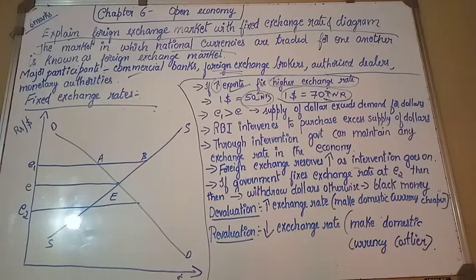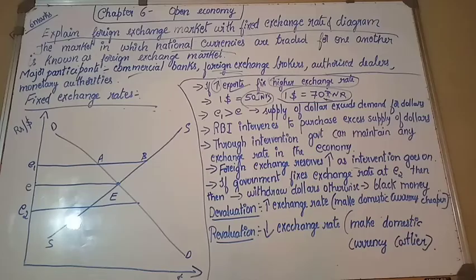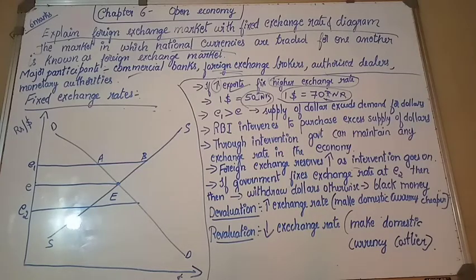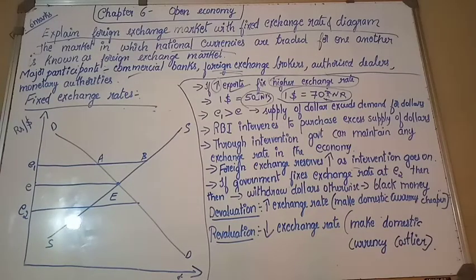When we fix a higher exchange rate, our domestic currency — Indian rupees — becomes cheap. For outside countries, purchasing our goods becomes cheaper for them. Earlier one dollar got goods worth 50 rupees; now with one dollar they get goods worth 70 rupees — so more goods are available. Our currency becomes cheaper for foreign countries, and that is why our exports increase.